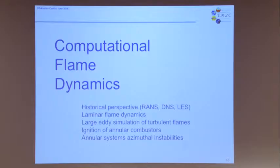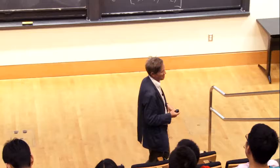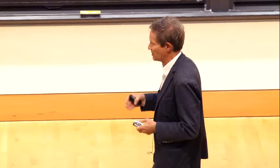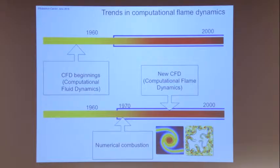Let's spend the last minutes looking at computational flame dynamics. This is the modern fluid dynamics — CFD now for combustion — because now we calculate flames which move around. It's really flame dynamics and it's computational. CFD started in the 1960s because before that the computers available were quite limited. During the 1960s the algorithms started being developed.